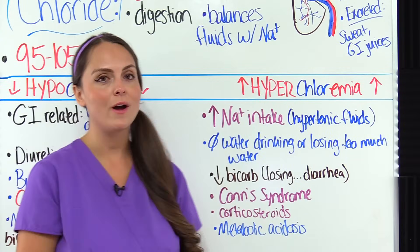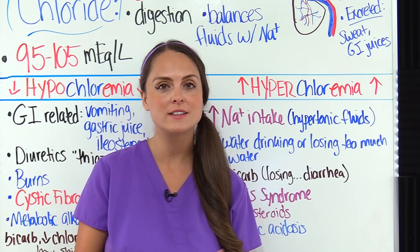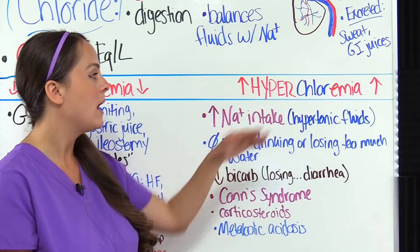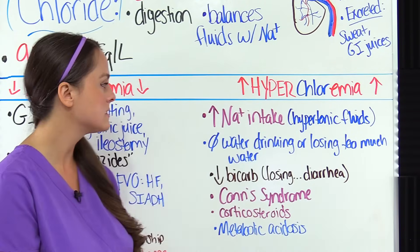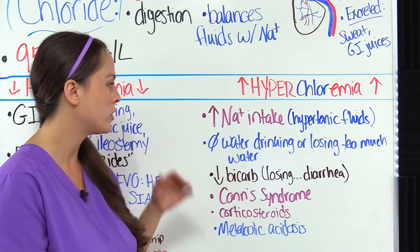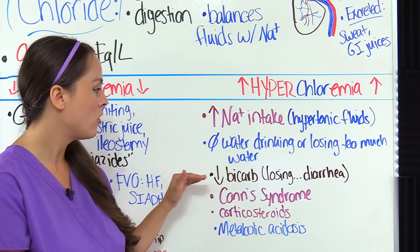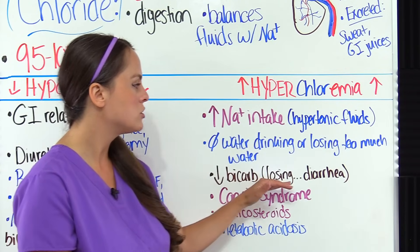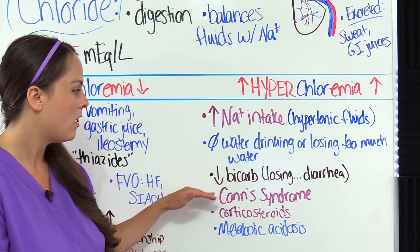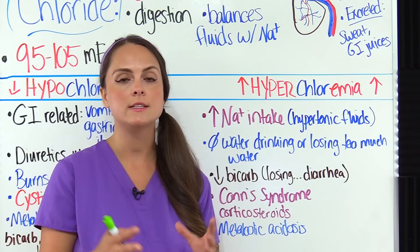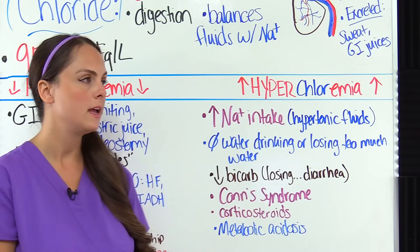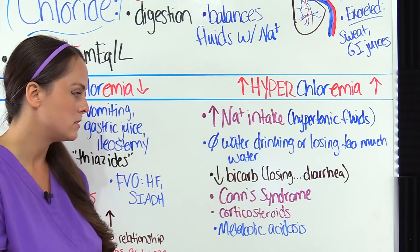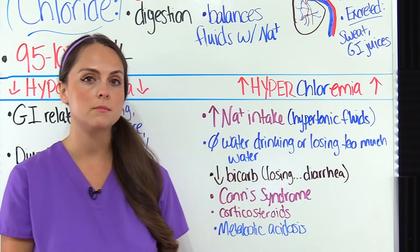Now let's look at hyperchloremia — what can drive the chloride level up. It's going to be similar to the causes of hypernatremia since sodium and chloride go hand in hand. Consuming too much sodium can drive chloride up, such as giving the patient too many hypertonic solutions. The patient not drinking enough or losing too much water can raise both sodium and chloride levels. A decreased bicarbonate level can increase chloride because of their opposite relationship. Also Conn syndrome — with increased aldosterone — can elevate chloride, along with corticosteroids and metabolic acidosis.